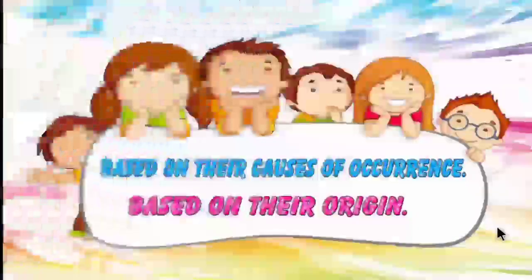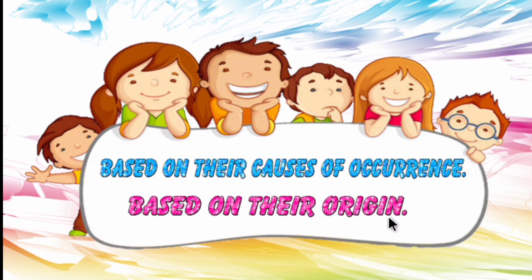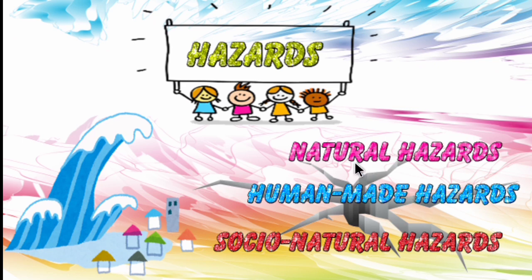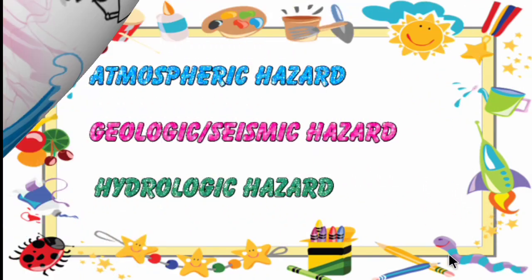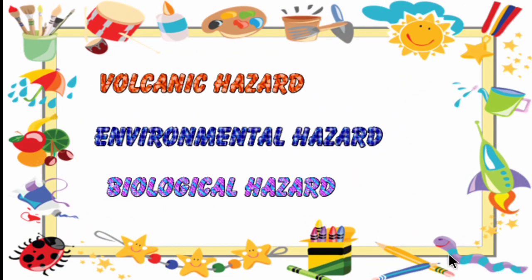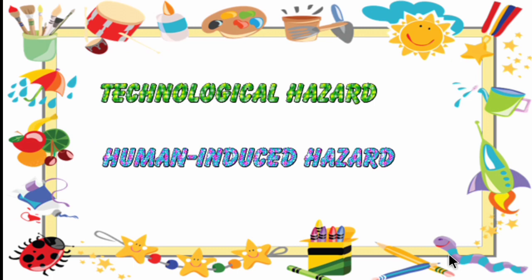We can classify hazards based on their causes of occurrence and based on their origin. Based on causes of occurrence, hazards are divided into natural hazards, human-made hazards and socio-natural hazards. Based on origin, they are classified into atmospheric, geologic or seismic, hydrologic, volcanic, environmental, biological, technological and human-induced hazards.